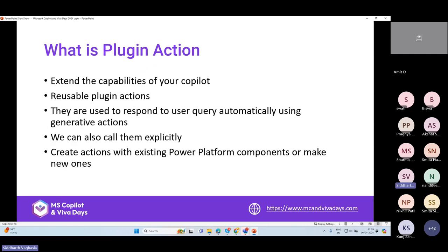What are plugin actions? When we create a custom Copilot in Copilot Studio, it responds to users based on topics. Within each topic we write custom logic. For example, if a user asks about the weather, the topic trigger handles different phrasings, and then you write logic to respond. With plugin actions, that changes — you can create reusable plugin actions that respond to user queries automatically using generative action, so Copilot Studio knows which plugin to call based on the user's query context.